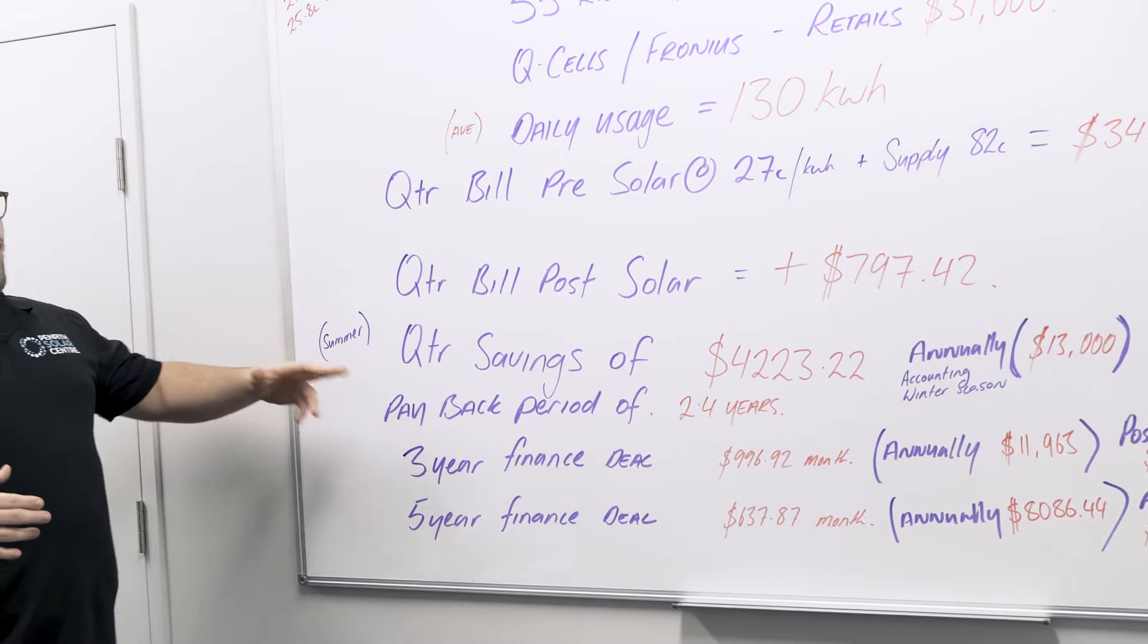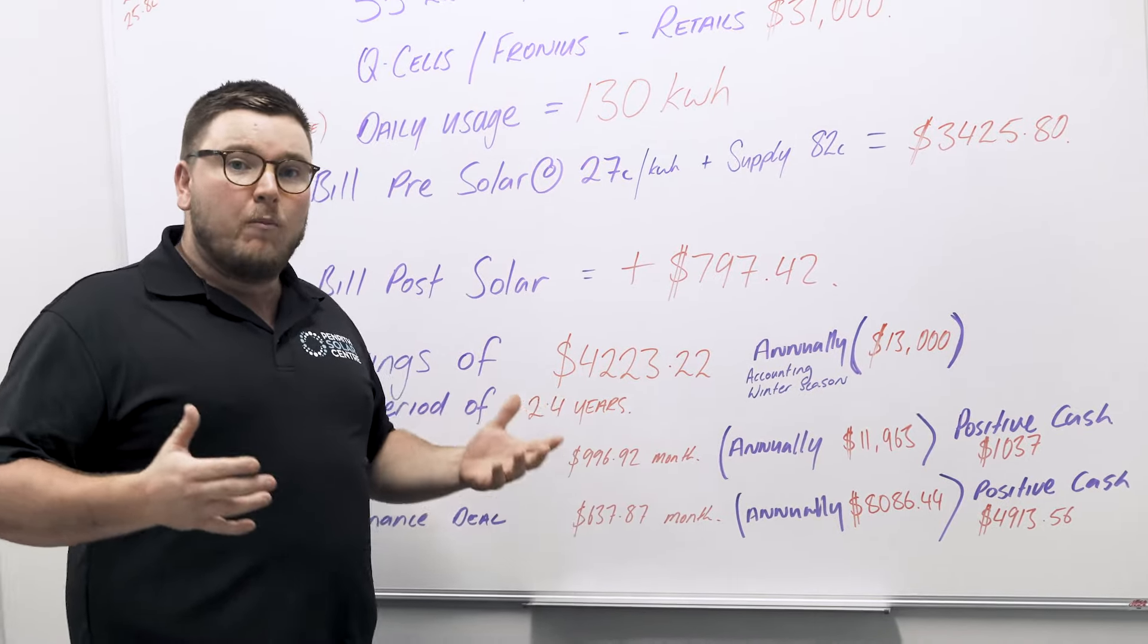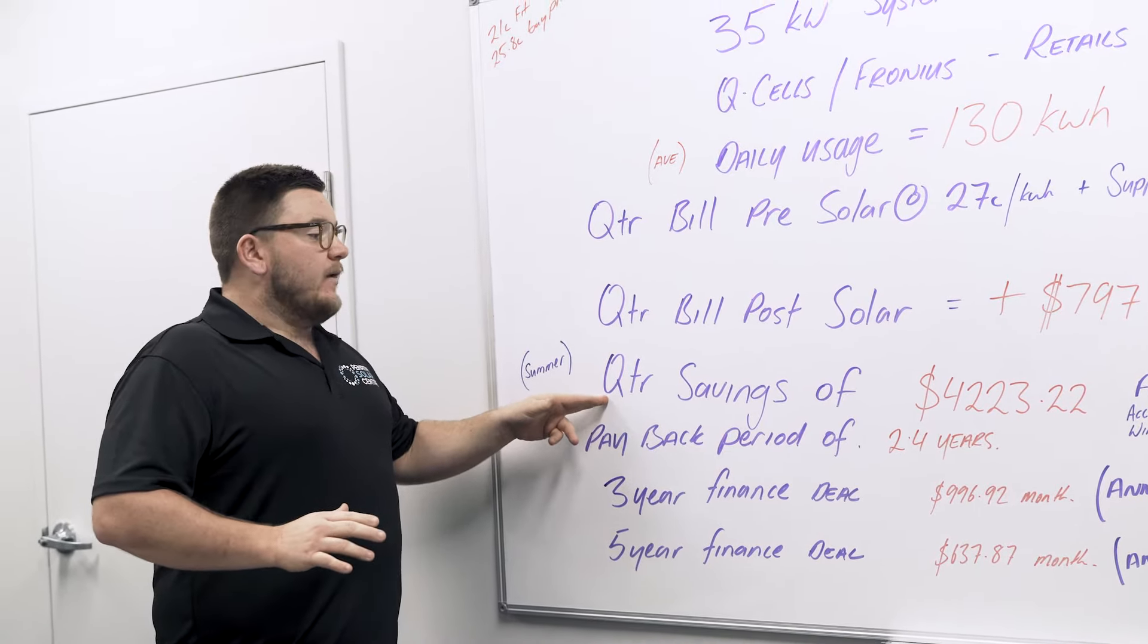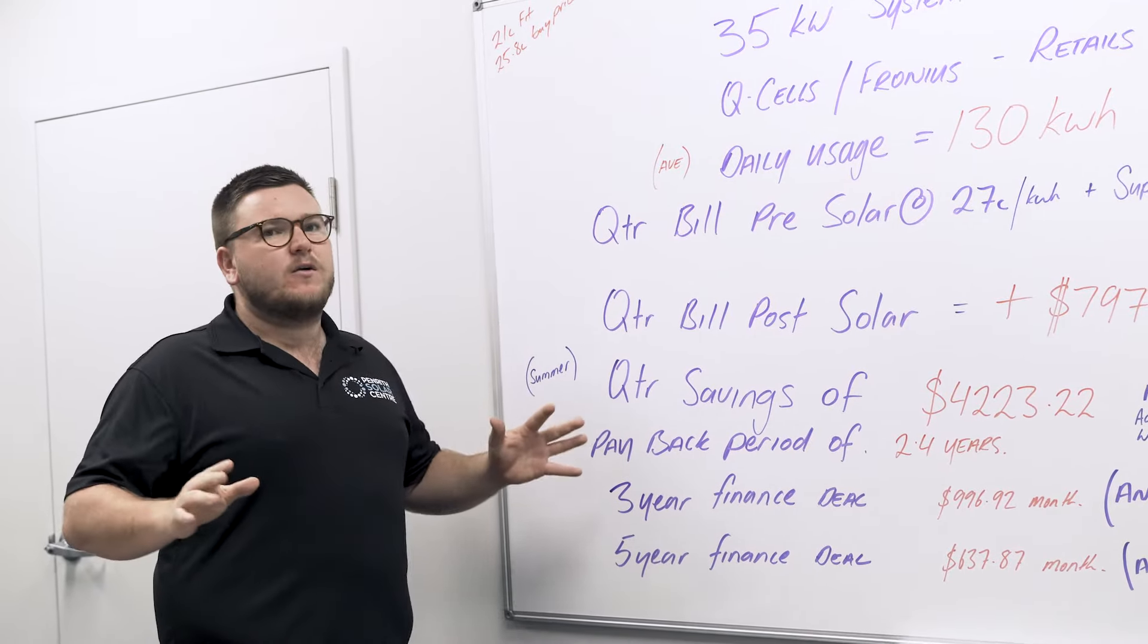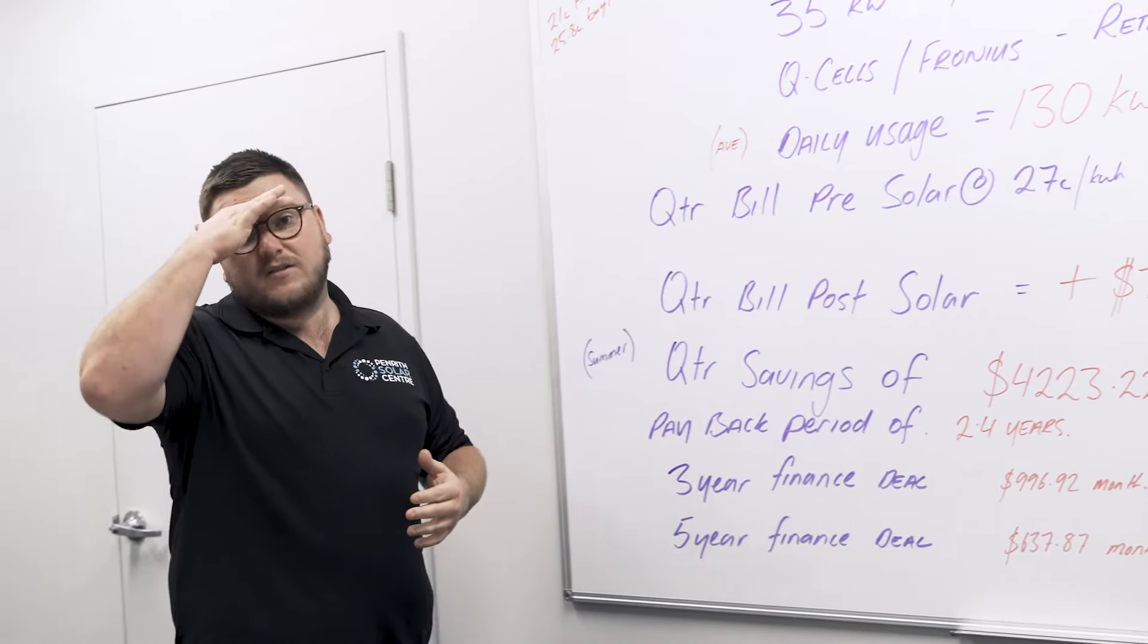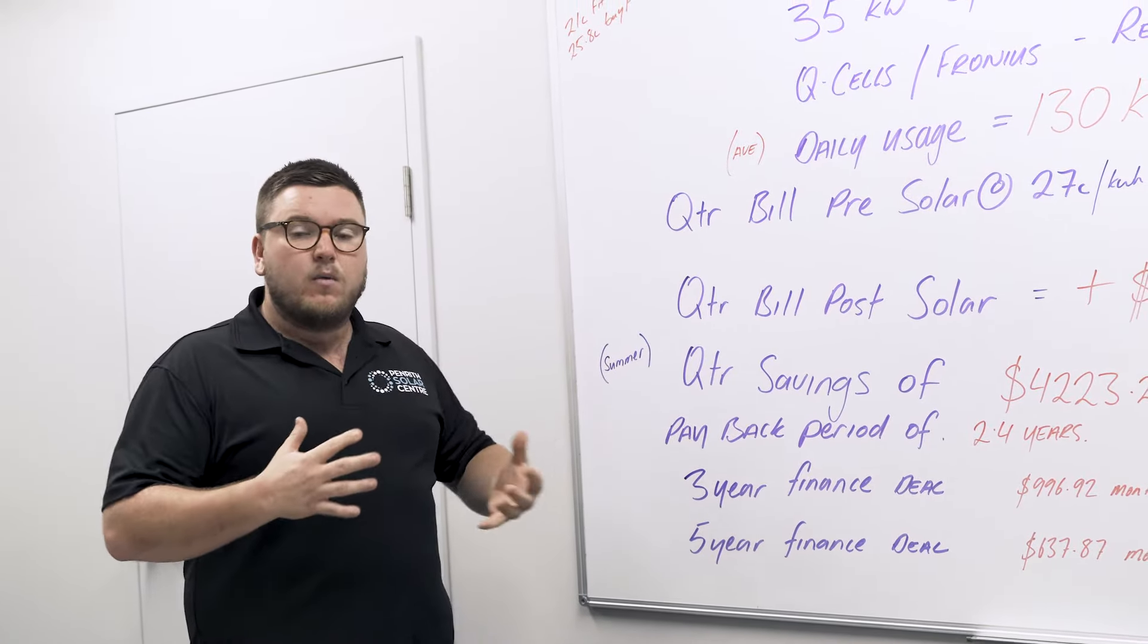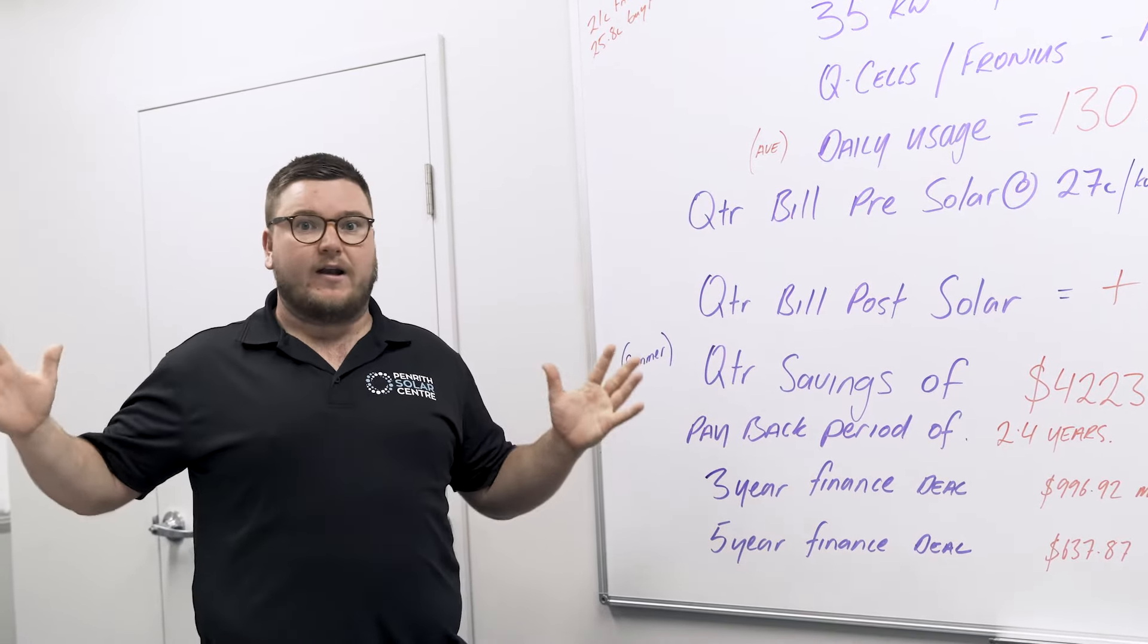That's a savings of $4,223.22 per bill. Annually, and keep in mind this is our summer bill where we're charging electric vehicles here, we're using air cons flat out, everything we possibly can, and they're our savings. So we do use a lot of our energy during the daytime, so our self consumption is quite high. But you've got to keep in mind as well that was a summer bill, very hot summer. We were using a lot of energy, air cons were on from 6 in the morning till 8 o'clock at night, we were working very long hours.